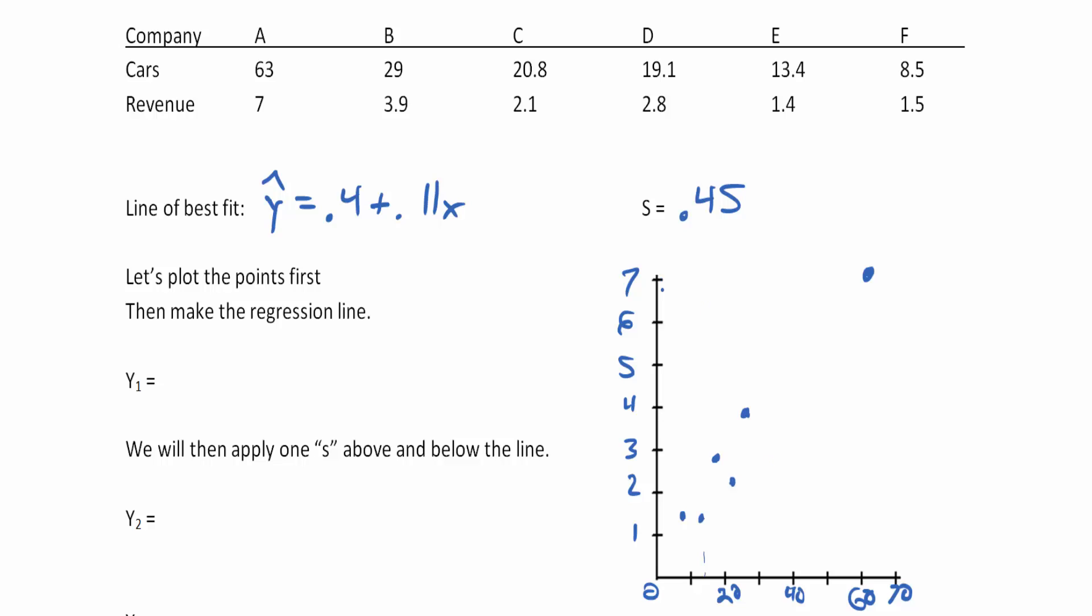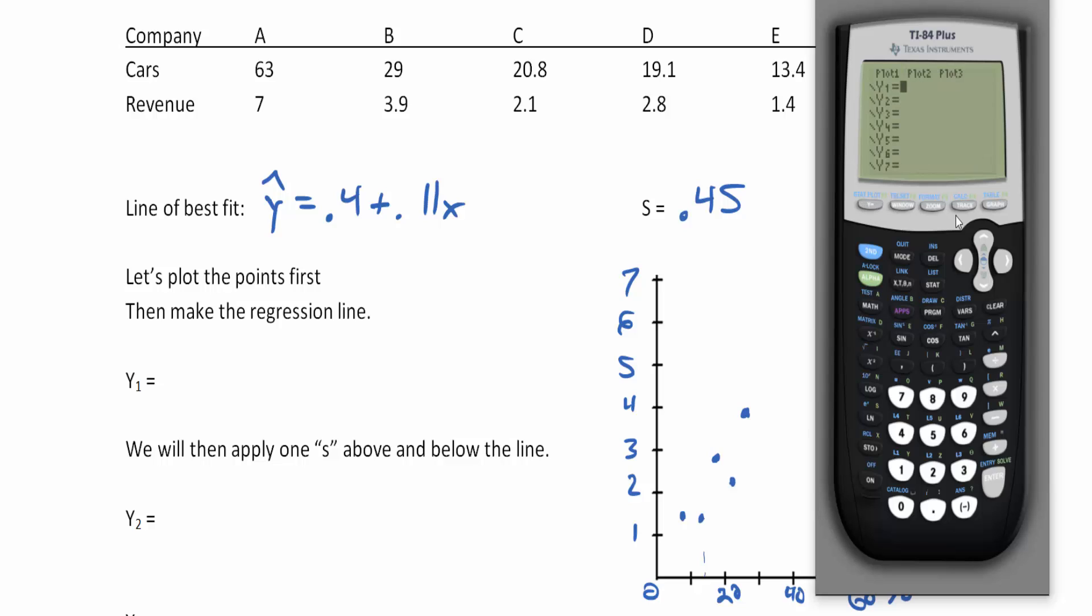We can look at this on our calculator. Click y equals, turn plot one on. We're going to type in 0.4 plus 0.11x and hit graph after we change our window. Our window goes from zero to seventy by tens.